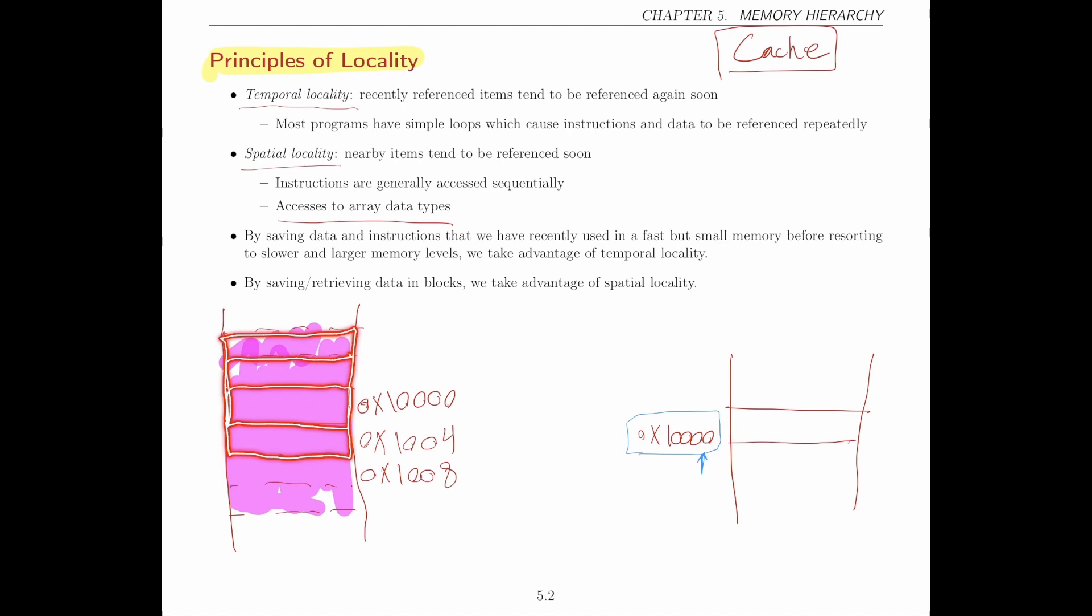Why? Because as soon as you access this position, the next four places are also going to come and be saved in the cache. Therefore, when you get to the next place and you want to access the next instruction, you don't have to go to memory—you already have it in cache.